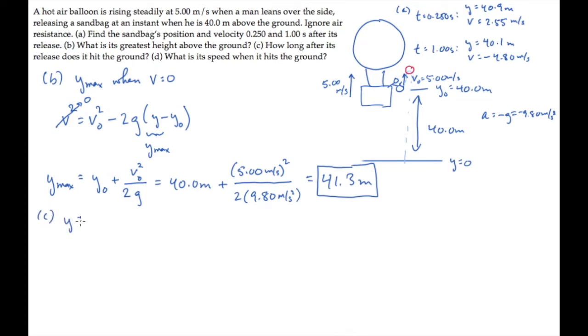Part C asks us to find the time between release and hitting the ground. There are two ways to do this. The first is to use this kinematic equation. If you do that, the final height is going to be zero. So y would equal zero. And you would solve this for the time when y equals zero. The solution requires the quadratic equation.